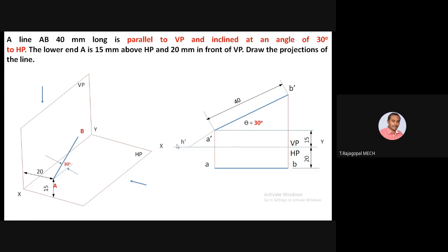To obtain the horizontal trace, the two views must meet each other. From H-dash, draw a projector perpendicular to XY. Also extend the top view line until it meets this projector. The intersection point is the horizontal trace — the trace with respect to the horizontal plane.